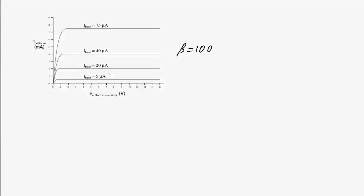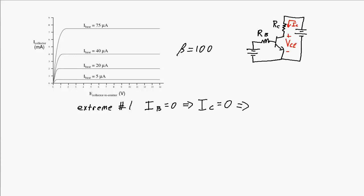A couple of important points occur at two different extremes. Extreme number one occurs when the base current is equal to zero. If the base current is zero, there can be no collector current — because the biasing of that PN junction is what allows collector current to flow. If there's no collector current, there will be no voltage drop across RC. So the collector-emitter voltage will be effectively the same as the source voltage, VCC.